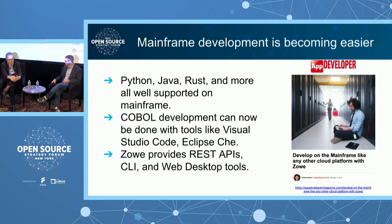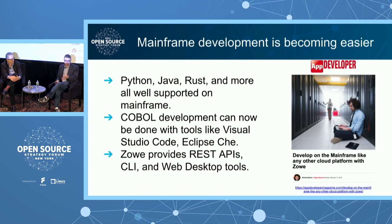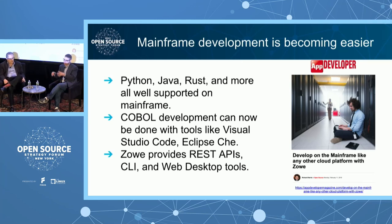Not only are we seeing newer languages on the mainframe, but we also see languages and tools that are native to the mainframe becoming so much easier. You can write COBOL code using Visual Studio Code or Eclipse Che. You have a technology like Zoe that's opening things up quite a bit — REST APIs, CLI on your laptop, a GUI desktop that connects — all those things are there.